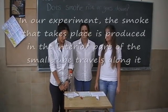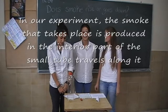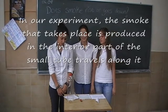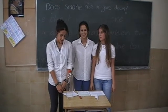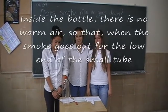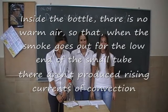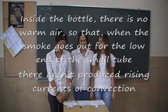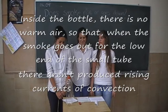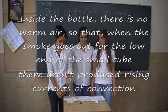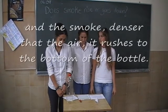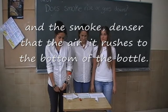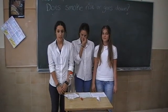In our experiment, the smoke that is produced forms in the interior of the paper tube and travels along it. Inside the bottle, there is no rising heat source, so when the smoke exits from the lower end of the tube, there is no rising current from combustion, and the smoke descends — the air rushes to the bottom of the bottle.